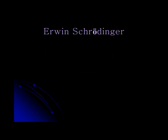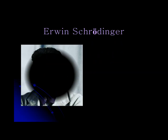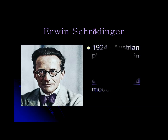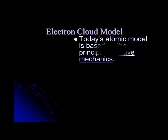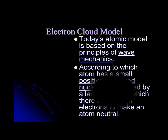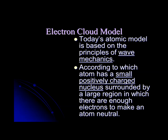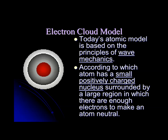Then came Erwin Schrödinger. In 1924, Austrian physicist Erwin Schrödinger developed the electron cloud model. Today's atomic model is based on the principle of wave mechanics, according to which the atom has a small positively charged nucleus surrounded by a large region in which there are enough electrons to make an atom neutral.